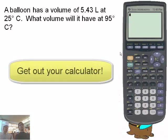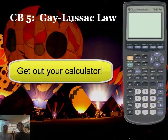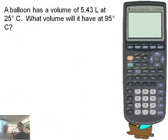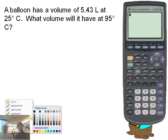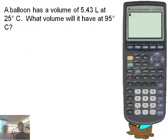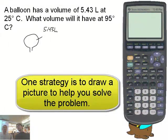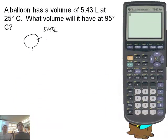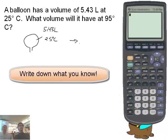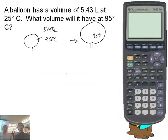Everybody, what do you need to get out? Your calculator. All right, a balloon has a volume of 5.43 liters. Actually, you know what I like to do, Mr. Sams? I want to draw pictures. I think pictures are good. Pictures are good, yeah. So I have a balloon. Okay, here's a balloon. And what do I know about this balloon? It has a volume of 5.43 liters. 5.43 liters. I can't talk. I've had way too much coffee. And 25 degrees Celsius. I don't like Celsius.